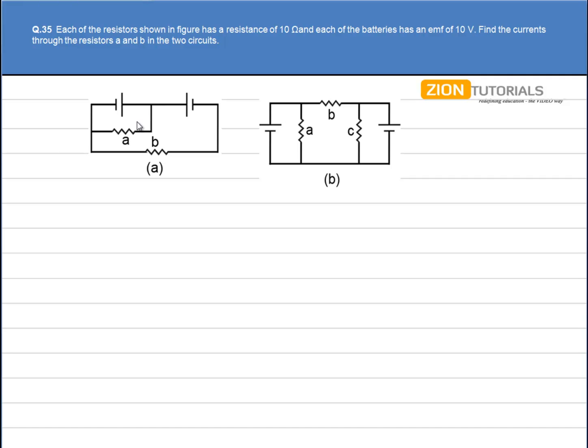Each of the resistors shown in the figure has a resistance of 10 ohms and each of the batteries has an emf of 10 volts. Find the current through resistors A and B in the two circuits.